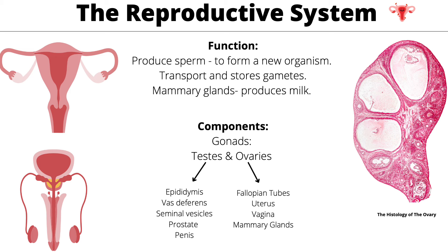The reproductive system's main function is to create a new organism. It transports and stores gametes, and in women the mammary glands produce milk. Main components are the testes and ovaries. The testes consists of the epididymis, vas deferens, seminal vesicles, prostate, and penis. The ovaries consist of the fallopian tubes, uterus, vagina, and mammary glands. Sperm cells are created in the testes, move to the epididymis — located on top of the testes — where they mature to be able to fertilize eggs.